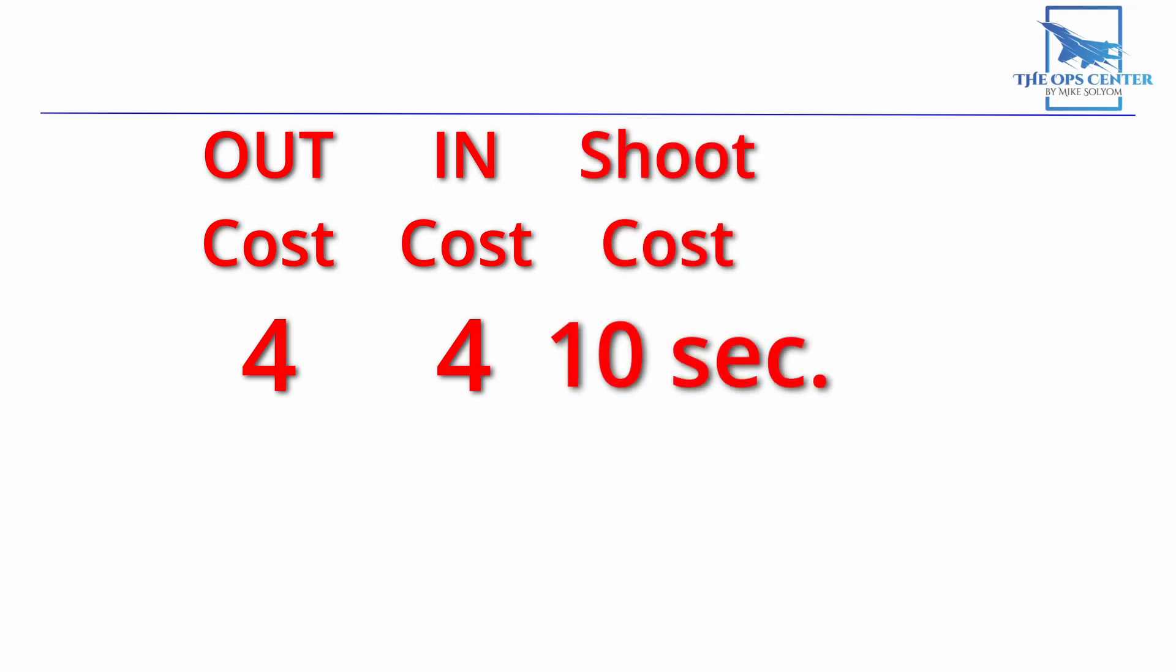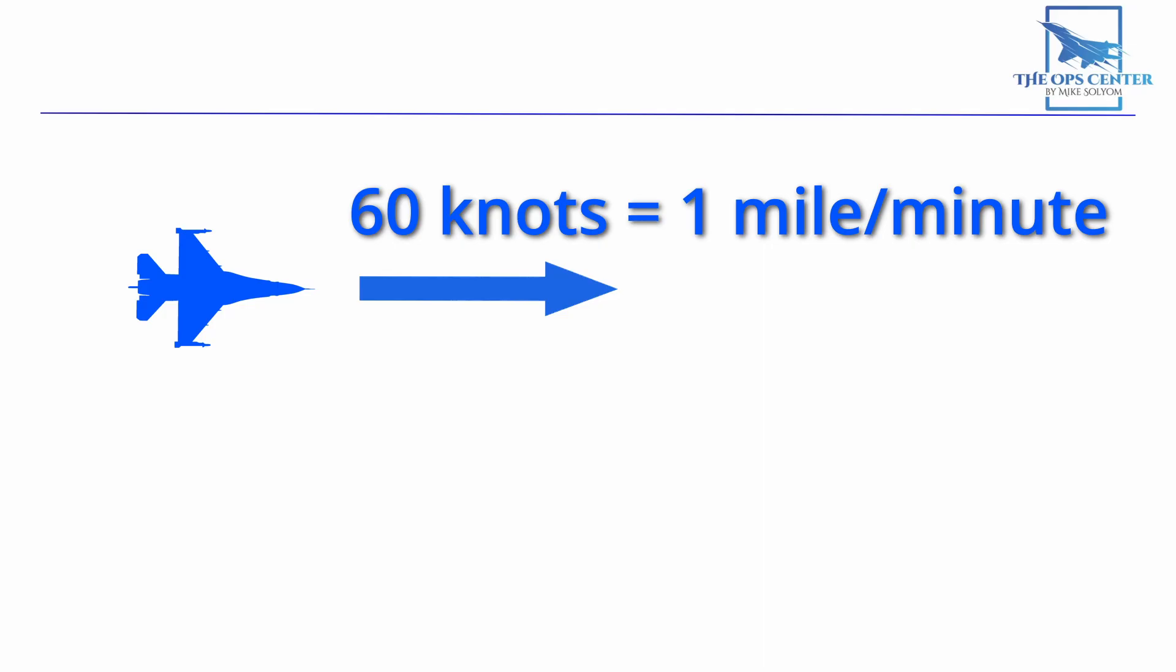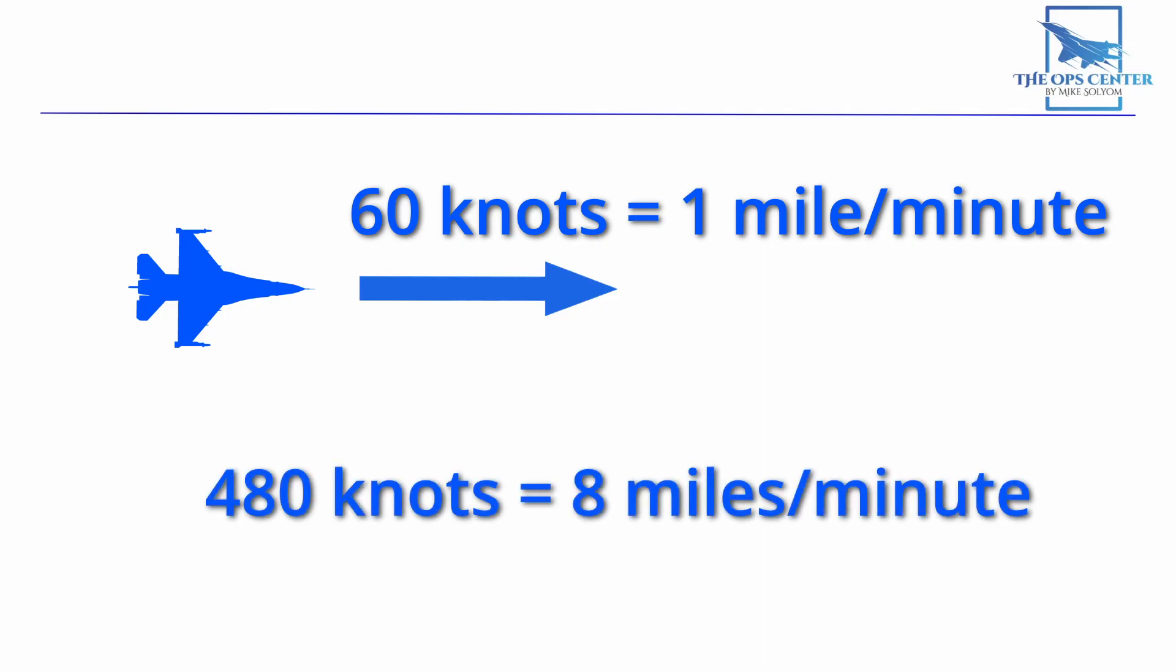We already know how much range an OUT uses up. During testing, I found that an IN also cost 4 miles in almost every case. Now let's say we need 10 seconds to find our target and launch a missile at it. This will be our third number in the equation. But for this, we need a distance, not a time. So let's go over how we can convert 10 seconds into a distance. Every 60 knots of speed is 1 mile per minute. So at 480 knots, we'll be doing 8 miles per minute or 1.3 miles in 10 seconds. So we can use that 1.3 as our distance.